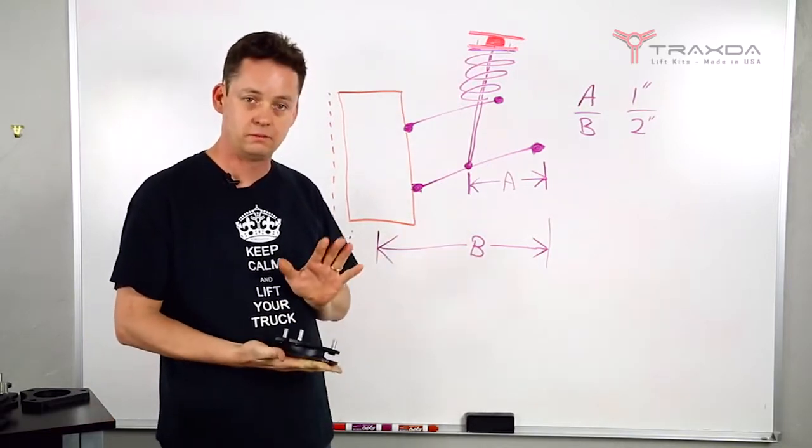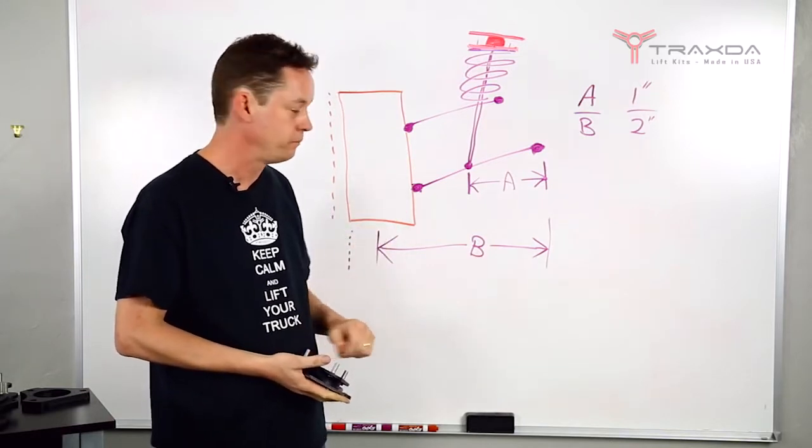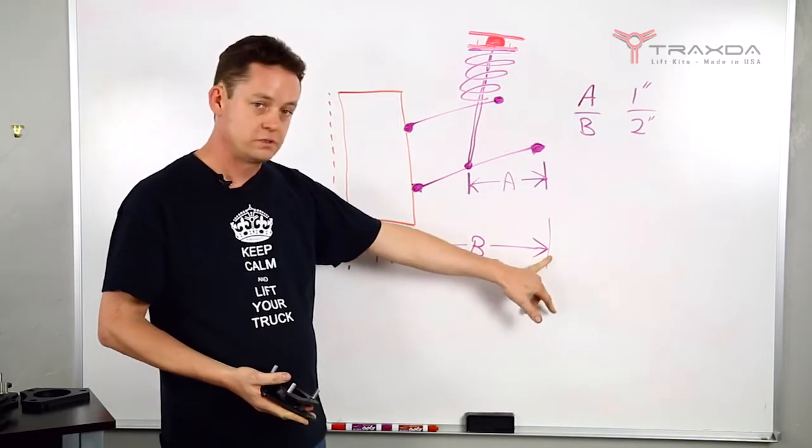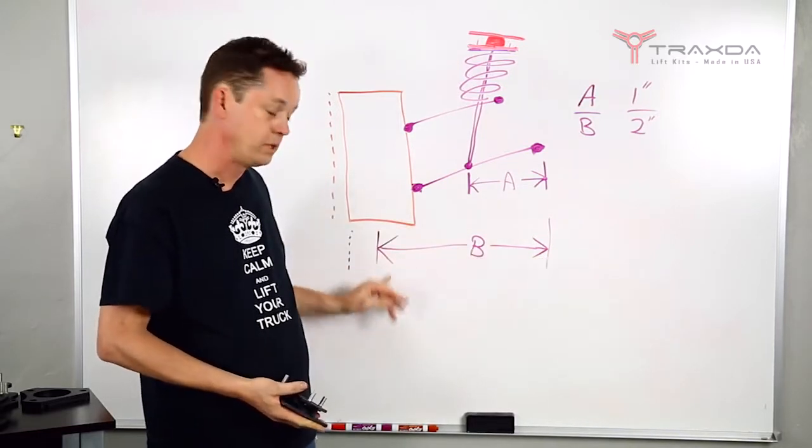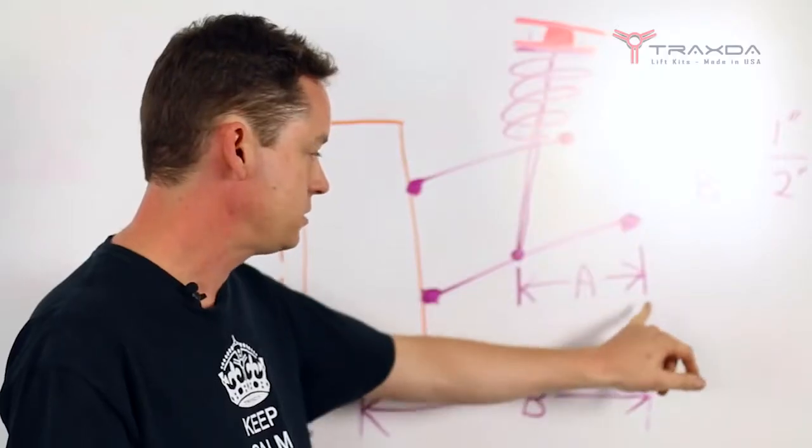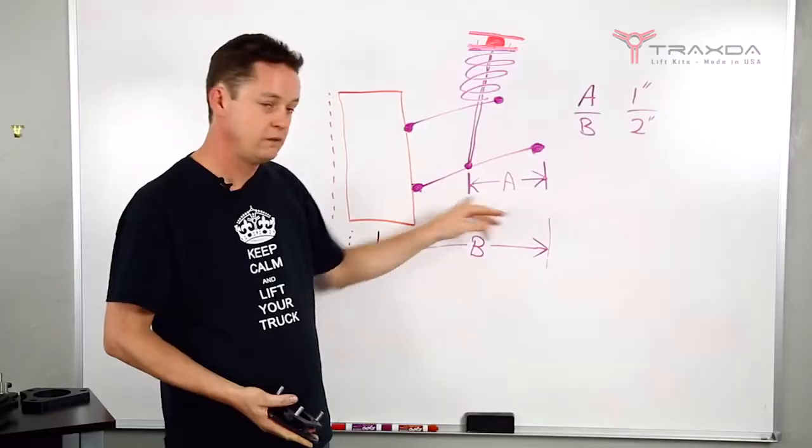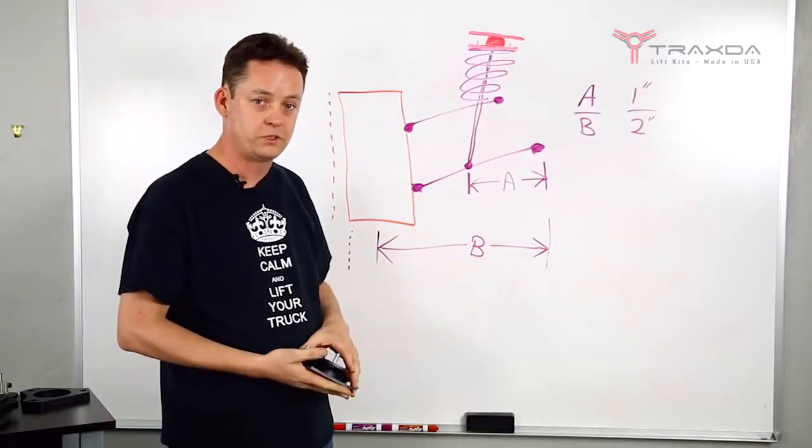And the reason your two inch lift is not two inches high is because of this A and B here. B is the distance between the suspension pivot point and the middle of the tire. That'll be important in a second. And A is the distance between that suspension point and where the strut mounts. As you can see here A is much shorter than B and it gives us a ratio.